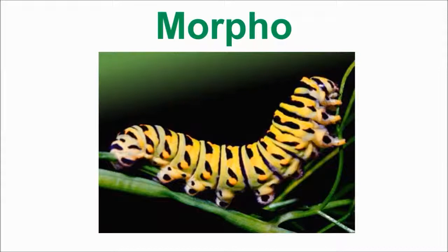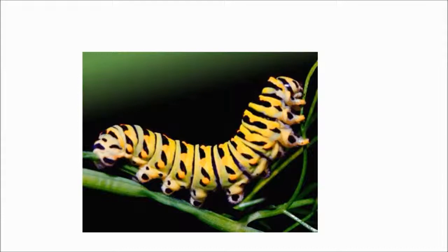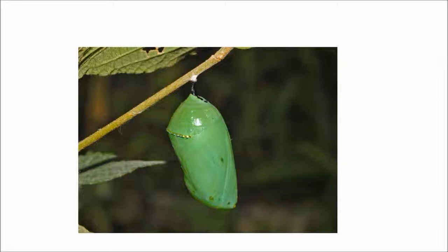'Morpho' means change. We know a change takes place because the butterfly starts off as a caterpillar. During metamorphosis, a caterpillar turns into a butterfly while inside a chrysalis. 'Sis' means a process, which we know takes place inside the chrysalis.